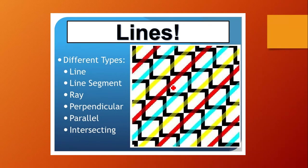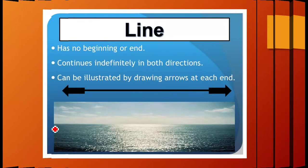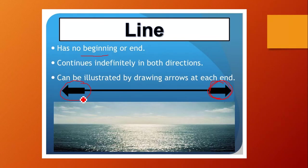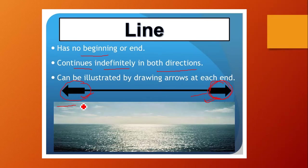As you can see in this pattern, we have various lines: line segments, rays, and lines that may be perpendicular, parallel, or intersecting. A line has no beginning or end — it continues infinitely in both directions. From both sides it may be extended.